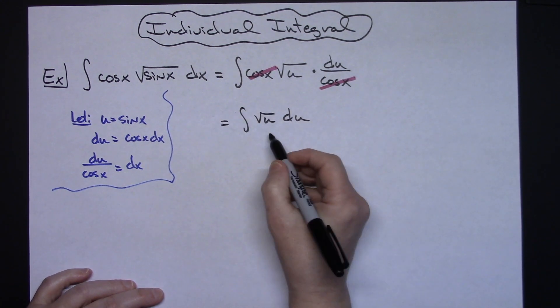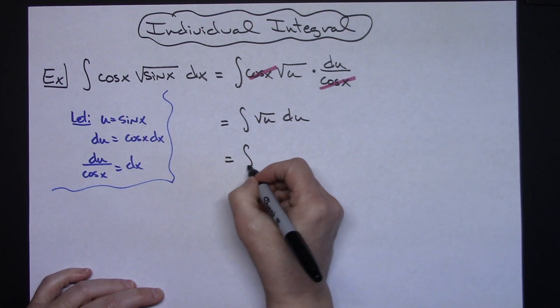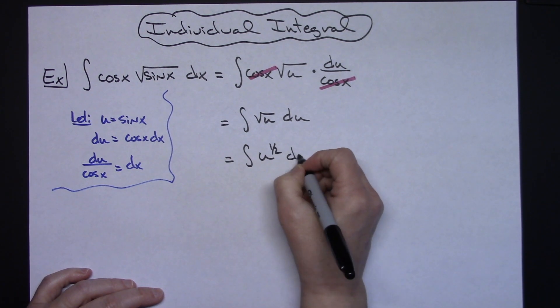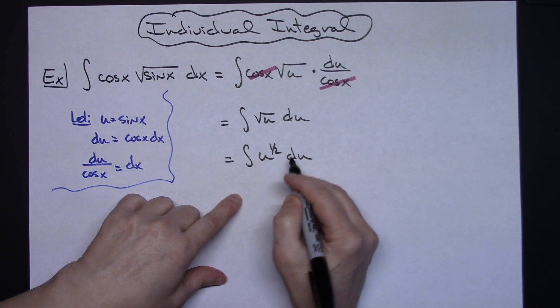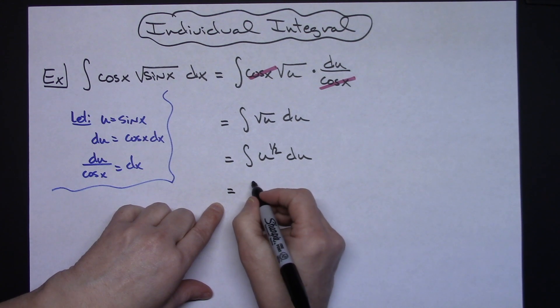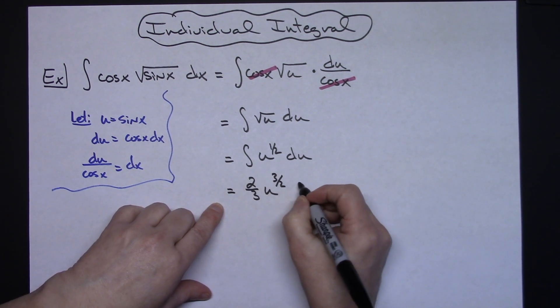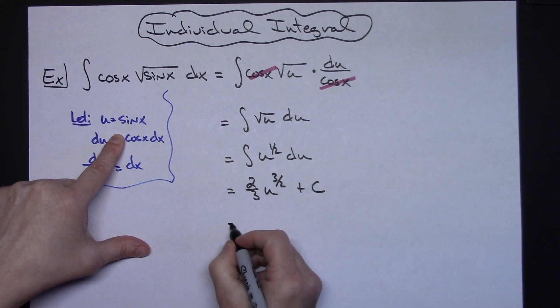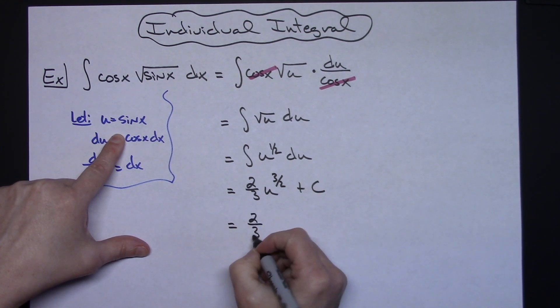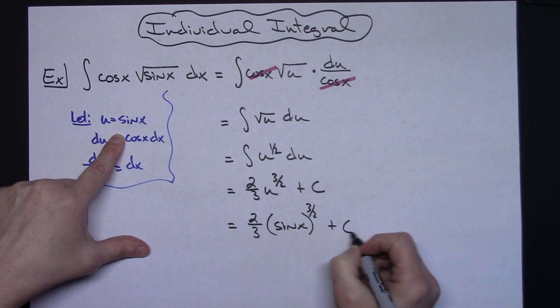The easiest way to integrate this would be to rewrite that into exponential form so I'll have the integral of u raised to the one-half du and then we can add 1 to that exponent which will give us three halves multiplying by that reciprocal we'll have two-thirds u raised to the three halves plus c and then replacing u with what it is equal to two-thirds sine x raised to the three halves plus c.